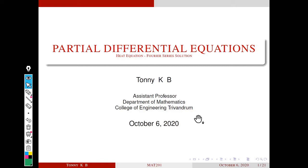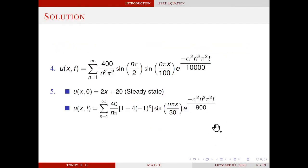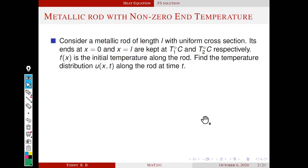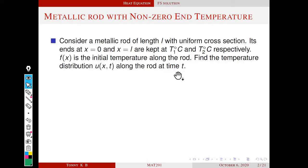Namaskaram. In last class we discussed the Fourier series solution of the heat problem with zero degree boundary conditions. Now we are going to discuss the heat problem with nonzero endpoint temperatures T1 and T2, where at least one of them is nonzero.